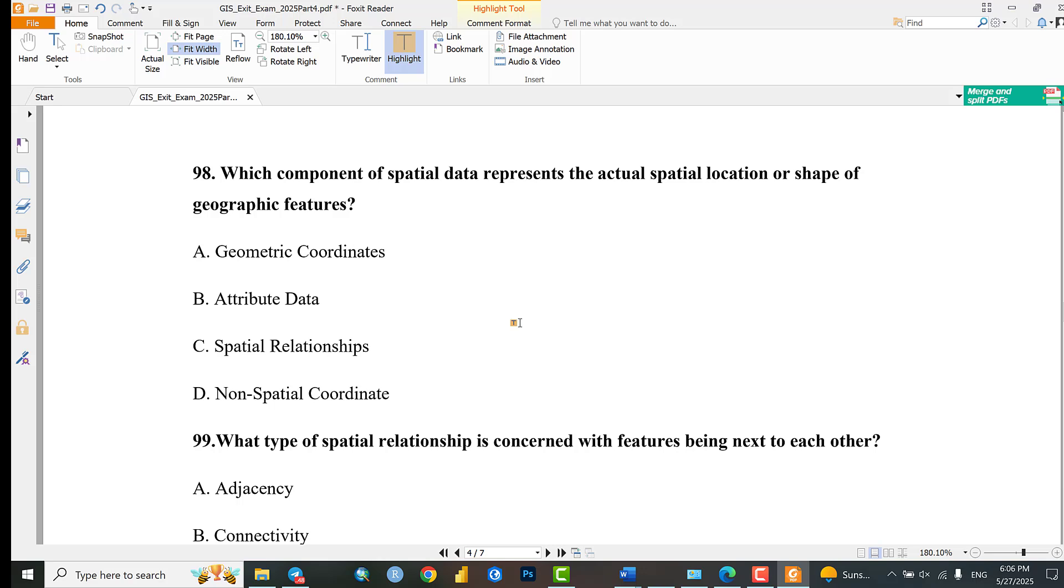Question 98: Which component of spatial data represents the actual spatial locations or shape of geographic features? Geometric coordinates, attribute data, spatial relationship, or spatial coordinates? The answer is geometric coordinates.